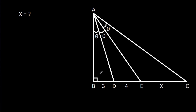In this video, we have been given a right-angle triangle ABC where angle BAD is theta, angle DAE is theta, and angle EAC is theta. BD is 3, DE is 4, and EC is X. We have to find X.